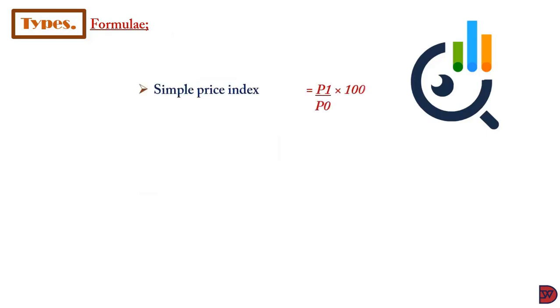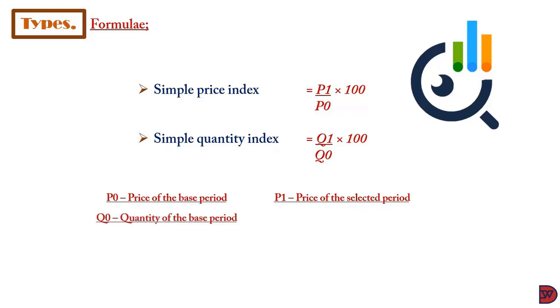The formula for simple price index is P1 divided by P0 multiplied by 100. For simple quantity index, it's Q1 divided by Q0 multiplied by 100. P0 is the price for the base period, P1 is the price for the selected period. Similarly, Q0 is the quantity for the base period, Q1 is the quantity for the selected period.